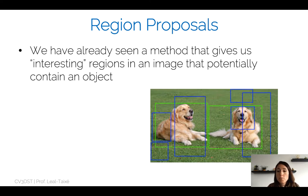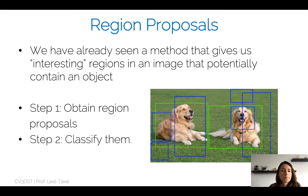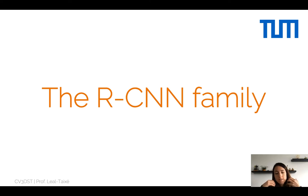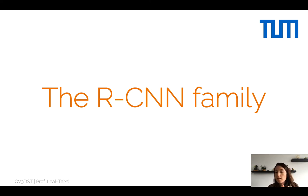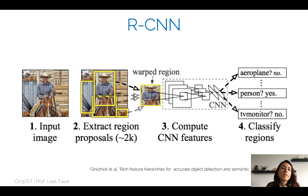This is exactly what two-stage detectors do: first extract region proposals — regions of interest — then classify and regress those regions. This is the principle behind the famous RCNN family of object detectors. The R stands for Region and then Convolutional Neural Networks. All members of this family — RCNN, Fast RCNN, and Faster RCNN — are based on this two-stage idea of first extracting regions of interest, then classifying and regressing them.